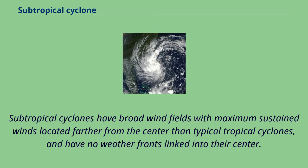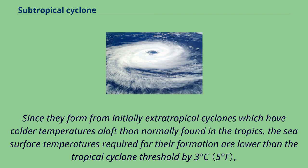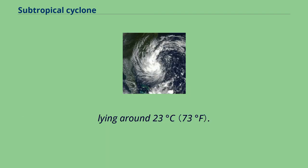Subtropical cyclones have broad wind fields with maximum sustained winds located farther from the center than typical tropical cyclones, and have no weather fronts linked into their center. Since they form from initially extratropical cyclones which have colder temperatures aloft, the sea surface temperatures required for their formation are lower than the tropical cyclone threshold by 3 degrees Celsius, lying around 23 degrees Celsius.